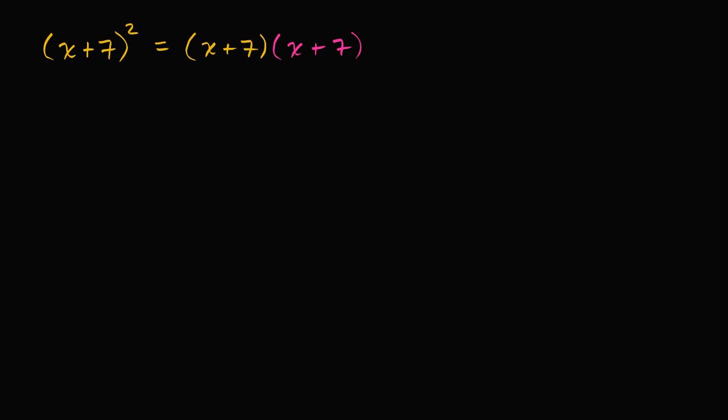So let's start by applying the distributive property twice. We'll distribute this yellow (x + 7) over this magenta (x + 7). We can multiply it by the magenta x, so it's going to be x times (x + 7) plus magenta 7 times yellow (x + 7).